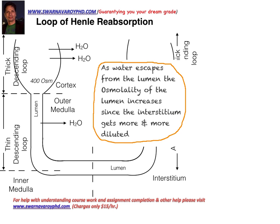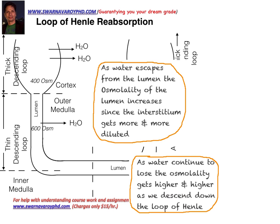As we go down from the thick descending loop to the thin descending loop, water keeps going out of the loop of Henle into the interstitium, and you can see how the osmolality increases from 400 to 600. As water continues to be lost, the osmolality gets higher and higher as we descend — going up to 900, and finally reaching 1200 OSM, where the osmolality increase stops. That means no more water is going to come out from the lumen to the interstitium side.